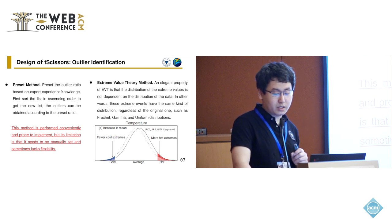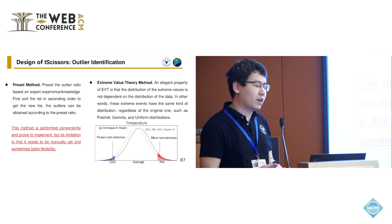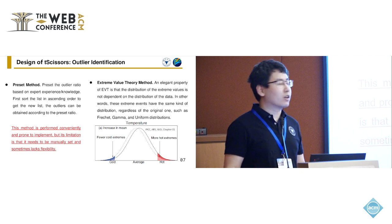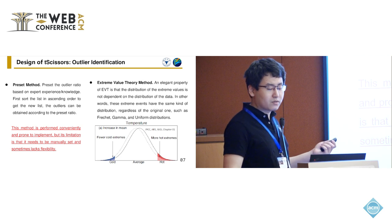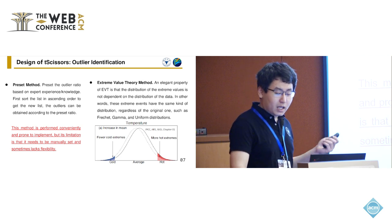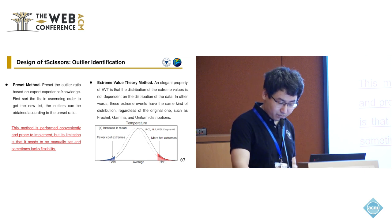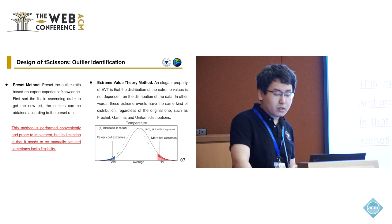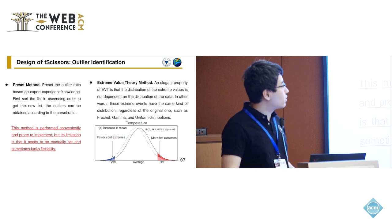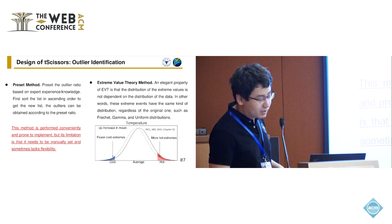The second component is for outlier identification, which is a common task in anomaly detection. On the one hand, we can directly adapt a percentile-based method, as shown on the left. On the other hand, we could leverage extreme value theory to automatically determine the threshold, as shown on the right.